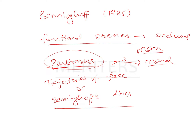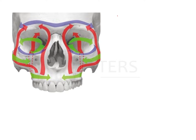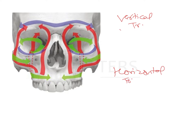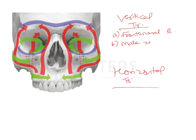In both areas they appear slightly different. In the maxilla, the trajectories present as bony thickenings called buttresses along the maxillary bones across the entire craniofacial skeleton. The maxilla has vertical and horizontal trajectories. The vertical buttresses include the frontonasal buttress, the malar zygomatic buttress, and the pterygoid buttress.